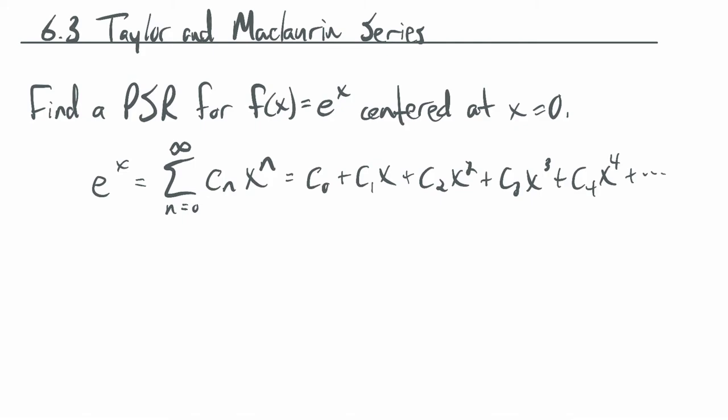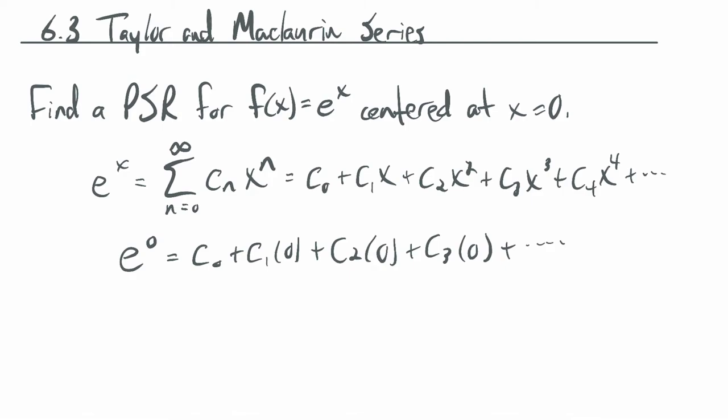There are two basic pieces of information we need to figure out what those c values should be. The first thing is, when x is 0, e to the 0 is 1. So we get c0 plus c1 times 0 plus c2 times 0 squared plus c3 times 0 cubed and so forth. This is just c0, so c0 is equal to 1.